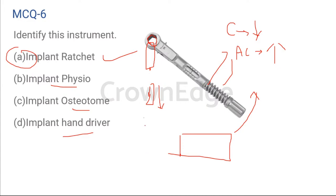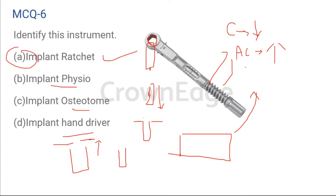Counter-sinking: the implant is supposed to lie at the crest of the bone, but sometimes the torque is not good enough, so we push it ahead. We then go in an anti-clockwise direction, pull the implant slightly outwards, and push it slightly more so that it lies below the crest of the bone. Counter-sinking is a procedure in which we push the implant slightly deeper than intended along the crest of the bone to make sure that primary and secondary stability are achieved at the same time. We push the implant lower than the crest of the bone using both clockwise and anti-clockwise direction. We do it very rarely, but when angulation is not correct or stability is not good enough.